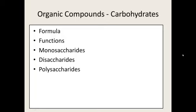Now that we have the basics of organic chemistry, let's talk about our four major groups of organic molecules: carbohydrates, lipids, proteins, and nucleic acids. Starting with carbohydrates — all carbohydrates reduce to the formula CH₂O, meaning it's a carbon that has been hydrated. For example, a molecule with the formula C₆H₁₂O₆ reduces down to CH₂O. The functions of carbohydrates are to store energy and for structure.